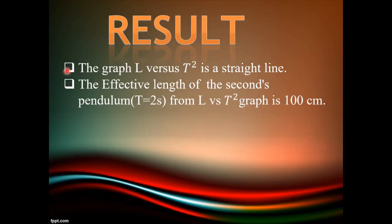Result: The graph L versus T² is a straight line. The effective length of the seconds pendulum whose time period is 2 seconds, from the L versus T² graph, is 100 cm.